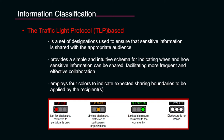TLP Green means the information can only be shared with the community — that specific sector, CERT community, or forum. TLP Amber means limited disclosure restricted to the participant's organization only — you are not allowed to share that information outside your organization. TLP Red means not for disclosure and restricted to participants only — if something is marked TLP Red, it is only for you and should not be shared with any other person.